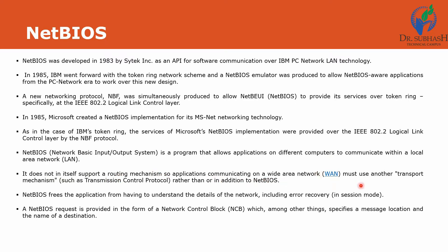Applications communicating on a wide area network must use another transport mechanism. NetBIOS does not identify the perfect route from which to transmit data — it has no capability for a routing algorithm. So if data transmission is required within a wide area network, another mechanism must be implemented, and that is TCP — Transmission Control Protocol. NetBIOS frees the application from having to understand the details of the network, including error recovery. NetBIOS requests are provided in the form of a Network Control Block, NCB, which specifies a message location and the name of the destination.